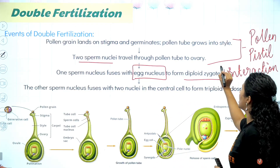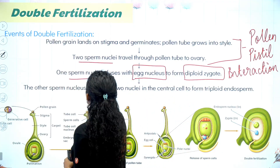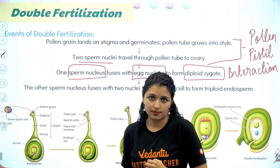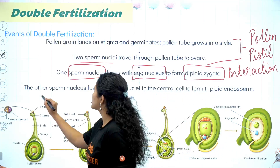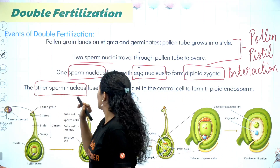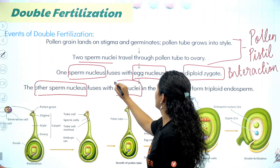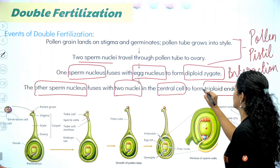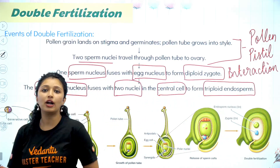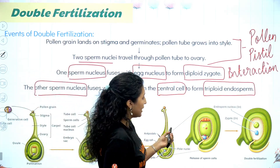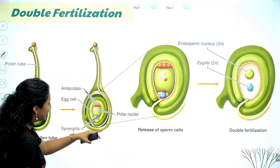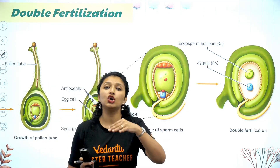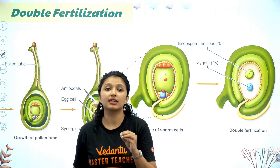One sperm nucleus fuses with the egg nucleus to form the diploid zygote. The other sperm nucleus fuses with the two nuclei in the central cell to form the triploid endosperm. So first, the pollen tube enters — pollen-pistil interaction — it enters one synergid, the tube nuclei have guided it, destination arrived.